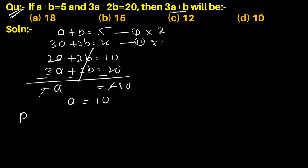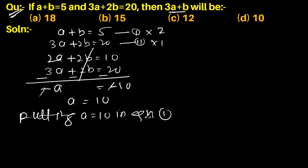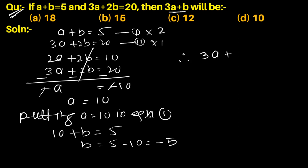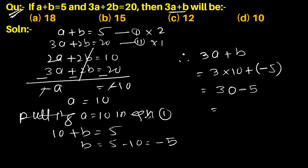Putting a equals 10 in equation first, we get 10 plus b equals 5, so b equals 5 minus 10 equals minus 5. Therefore, 3a plus b equals 3 into 10 plus minus 5, which equals 30 minus 5, equals 25.